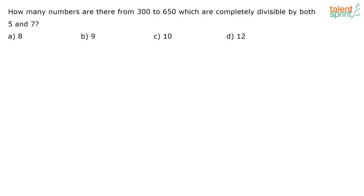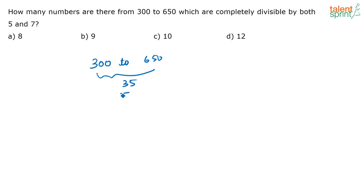Next question: how many numbers are there from 300 to 650 which are completely divisible by both 5 and 7? If the number has to be divisible by both 5 and 7, it must be divisible by 35, since 5 × 7 = 35.